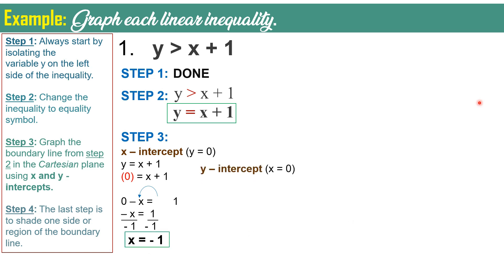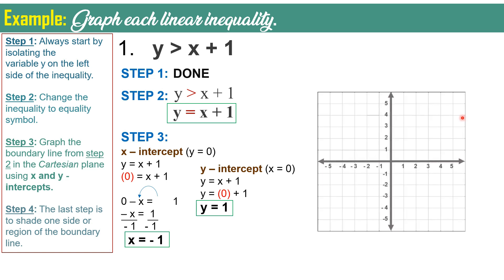For the Y-intercept, change the value of X into 0 using the same equation, Y equals X plus 1. Remove X and change it with 0. Now we only have Y equals 1, so the Y-intercept is equal to positive 1. Since we already have the intercepts, we may now graph. For the X-intercept, plot it on the X-axis — the horizontal line. Negative 1 is here; let's plot the point. For the Y-intercept, plot the point on the Y-axis. Positive 1 is over here; let's plot the point.